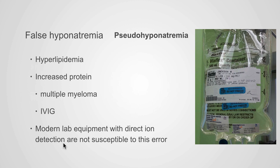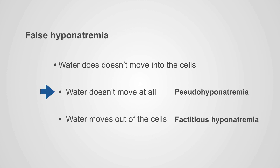The best way to detect pseudohyponatremia is: if you get hyponatremia, order a serum osmolality and see if it's low. If it's low, you're dealing with true hyponatremia. If it's high or normal, you're dealing with some form of false hyponatremia.